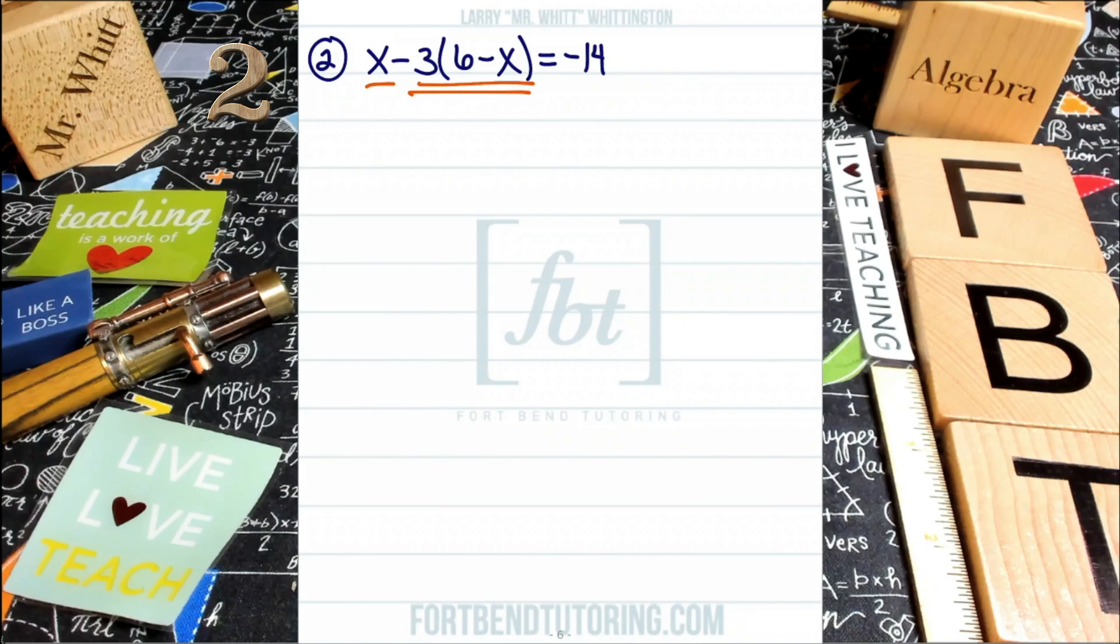So as long as negative 3 is multiplying on that set of parentheses, all of that combined is considered one term. Then, of course, on the right side of the equation, you have the one term, that negative 14. All right. So let's go ahead and dig in. The first thing you'll do is you'll bring down that variable x, that first term. Then, as promised, you're going to be distributing the negative 3.